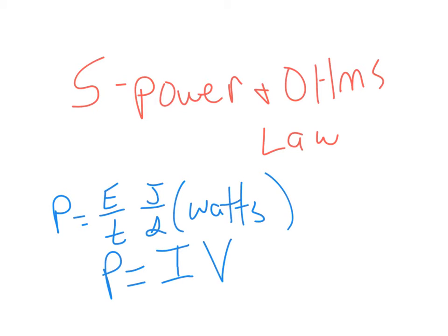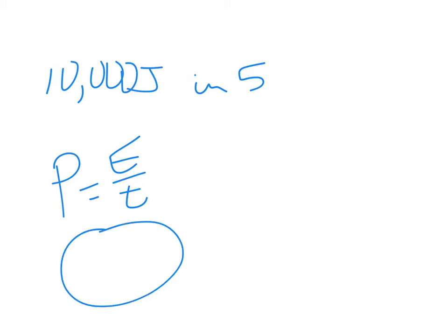Okay, number one: Let's say we've got a hot plate that uses 10,000 joules of energy in 5 seconds. What's the power rating? Well, power equals energy divided by time. If we did our circle, E would be on top, P and T on the bottom. So that's 10,000 divided by 5, which equals 2,000 watts.